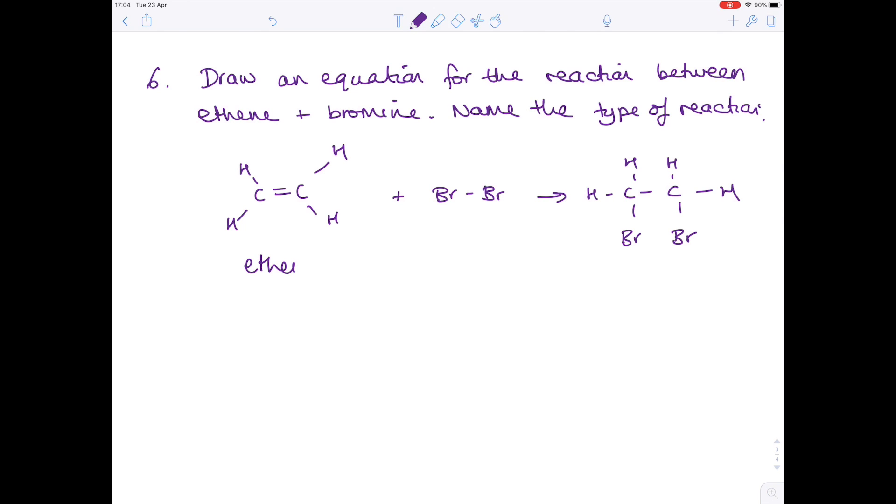This is ethene, this is bromine. They probably won't ask you this, but this is dibromoethane. The reason it's no longer ethene is because we don't have a double bond anymore. Because the bromine has simply added itself to the ethene, we call this an addition reaction.